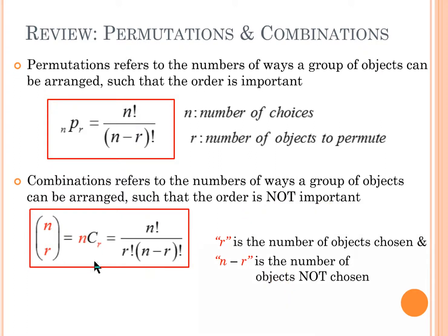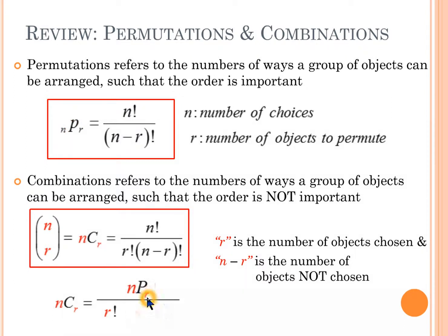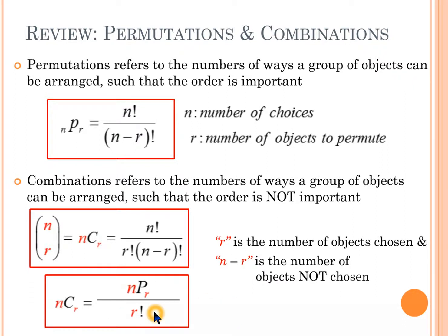Before we move on, the formula n choose r can be written in a different way. n choose r equals n factorial divided by r factorial times (n minus r) factorial. We know that n factorial divided by (n minus r) factorial is the same as n pick r. So this could also be written as n pick r divided by r factorial. This is another formula we can use when dealing with combinations.